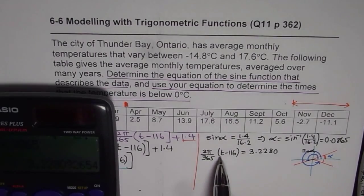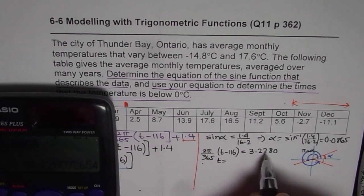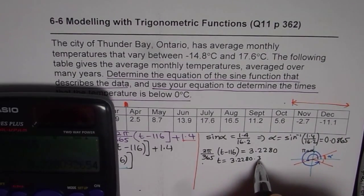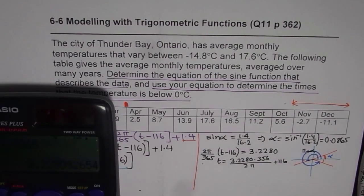Now from here, we can find the value of t. So t will be equals to this value 3.2280 times 365 divided by 2 pi, and then add 116 to it. So let's do it.